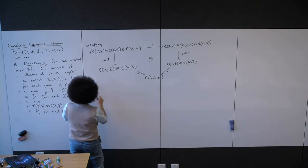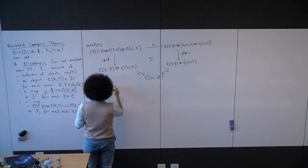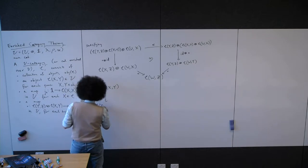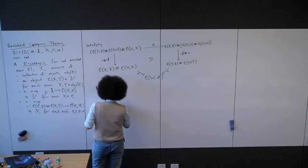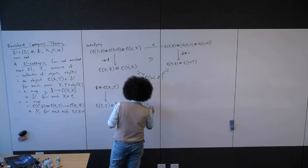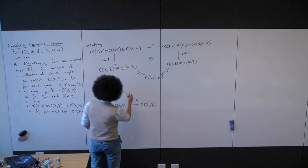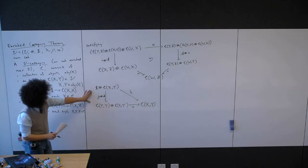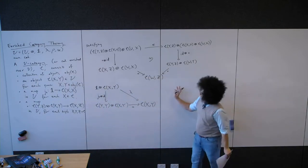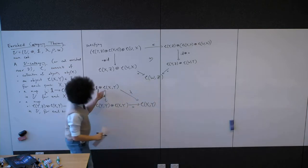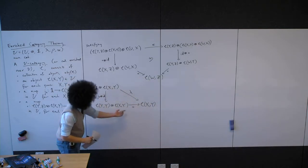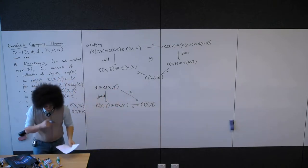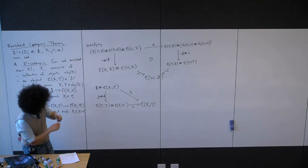For identity: we want the unit tensor C(x,y) to go via j_y tensor the identity to C(y,y) tensor C(x,y), and then compose to C(x,y), and this should equal the left uniter in V. That's one of the identity triangles. We also need another one over here where we use the right uniter, with C(x,y) tensor C(x,x). Those are the two conditions you need to satisfy from the identity triangles.